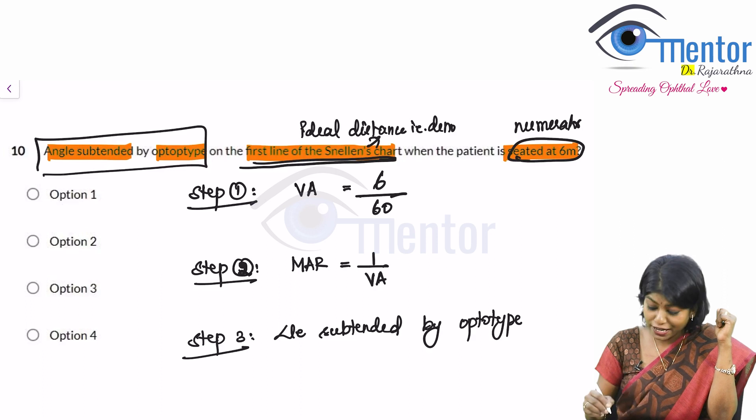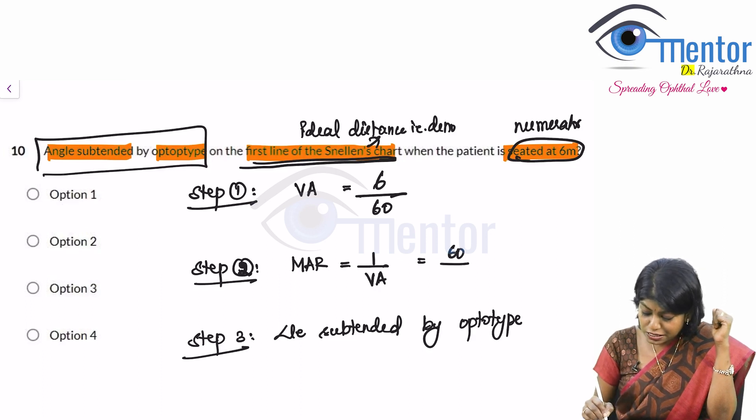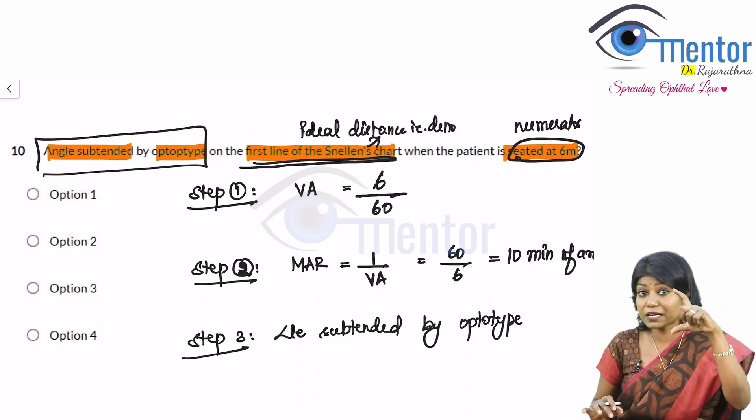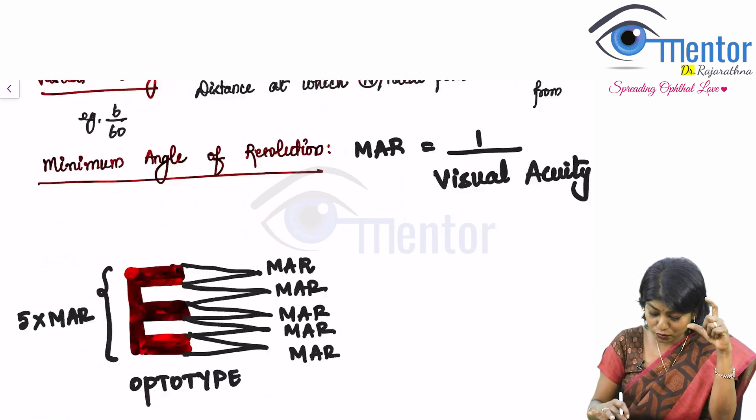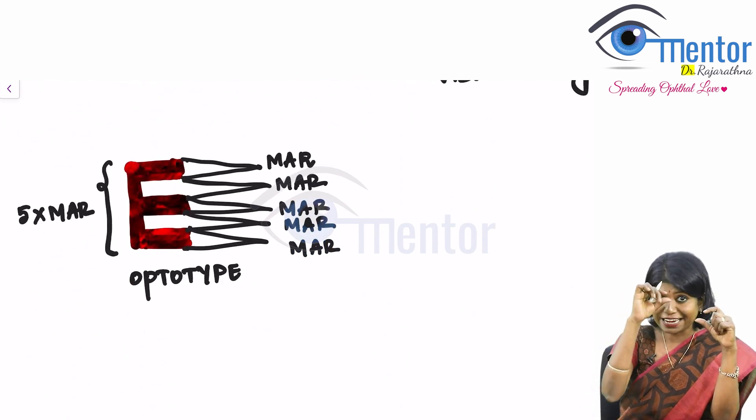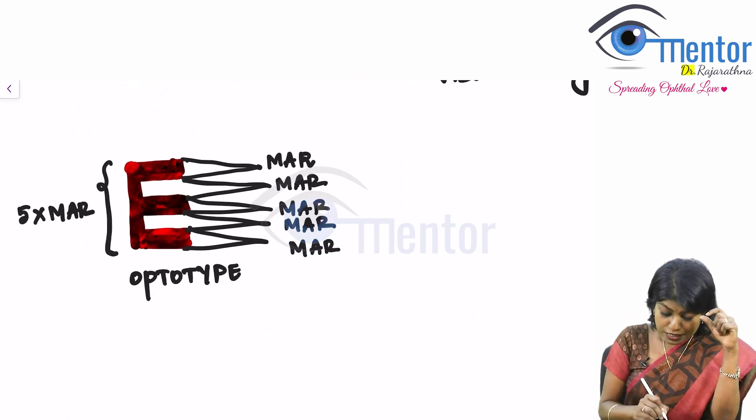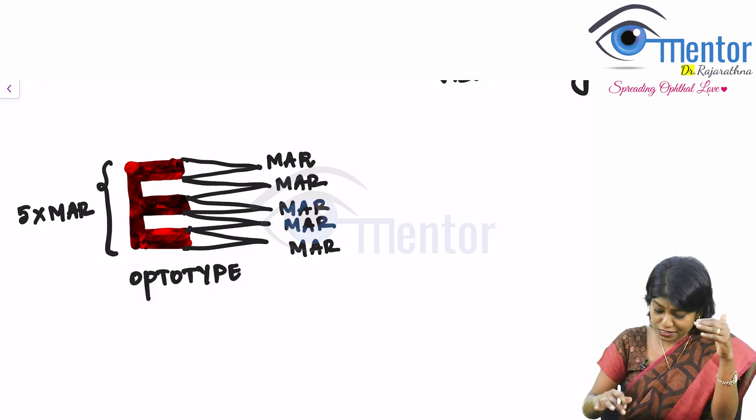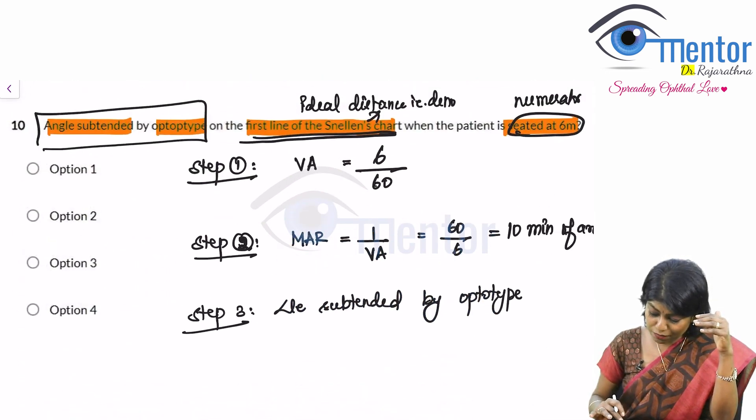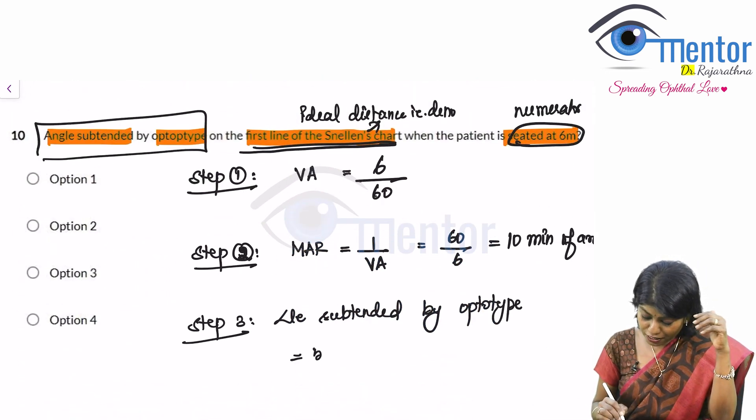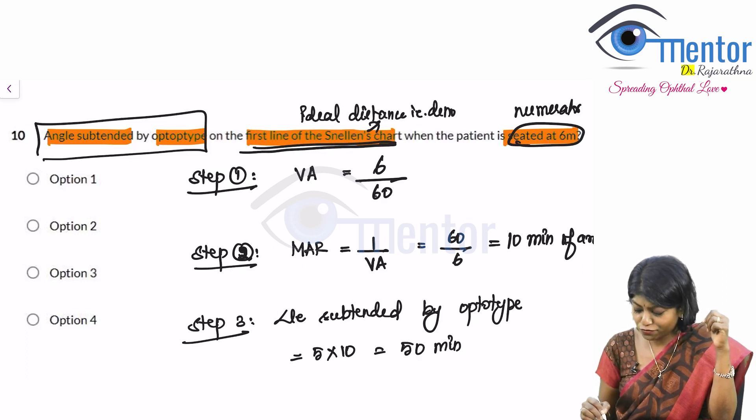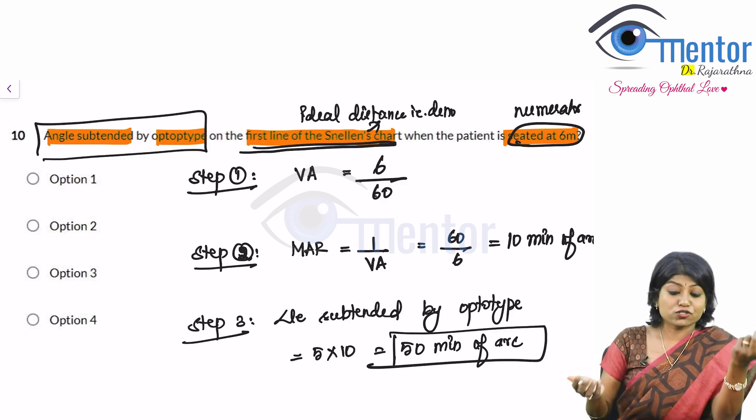What is MAR? Reverse, inverse of visual acuity, which is 60 by 6, which is 10 minutes of arc. But my question is asking, angle subtended by the entire optotype because what was minimum angle of resolution? Each limb only. So the entire angle 5 times MAR. So what is 5 times MAR? 5 into 10. So for this question, 50 minutes of arc. That is your answer.